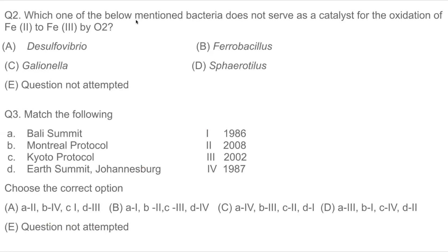Question 2: Which one of the following bacteria does not serve as a catalyst for the oxidation of ferrous to ferric in the presence of O2? Ferrous acesolus, Sphaerotilus, and Gallionella are all iron-based bacteria that can oxidize iron. Desulfovibrio is a strict anaerobic, meaning it does not work in the presence of oxygen — it always acts in the absence of oxygen. So it has nothing to do with oxygen, and A should be the correct answer.